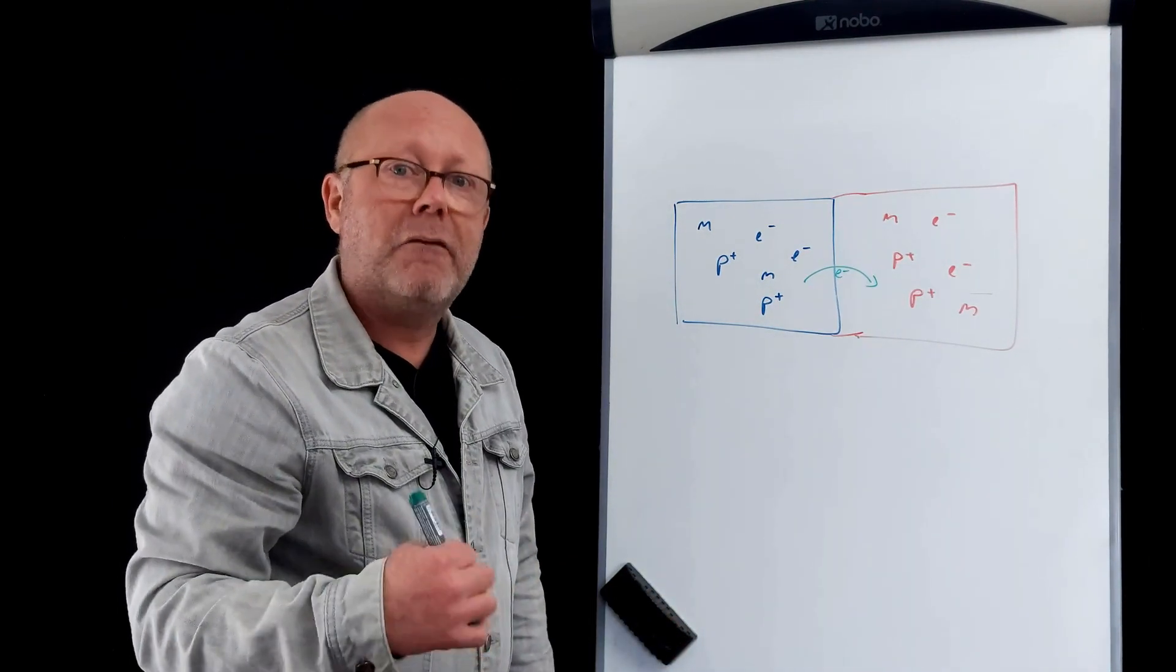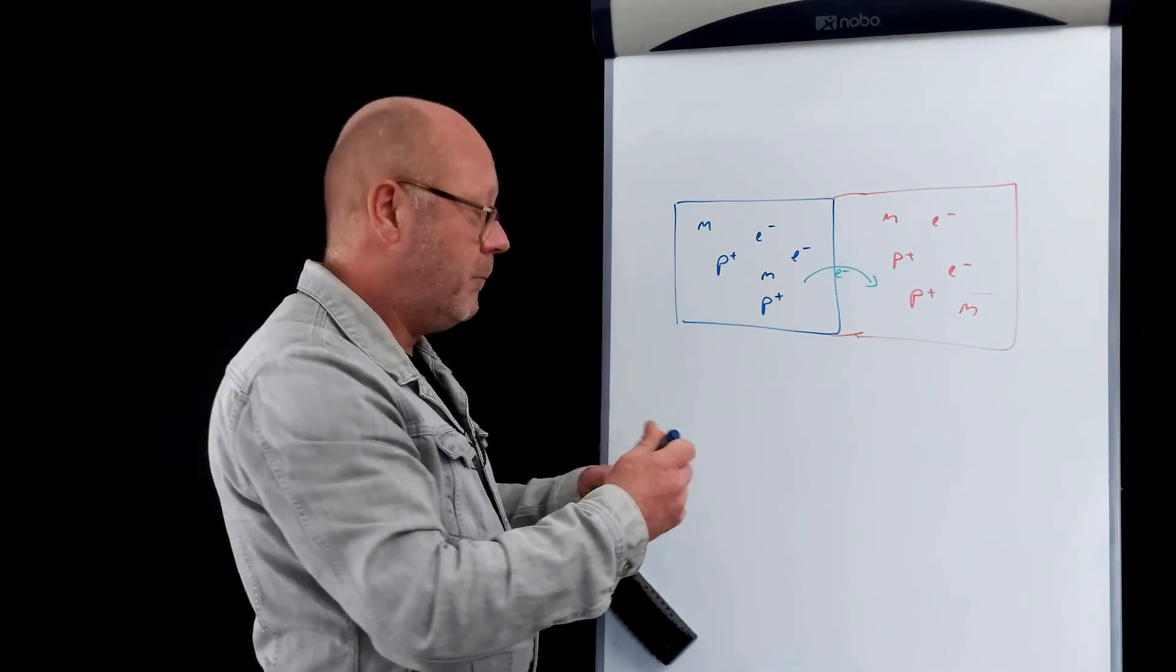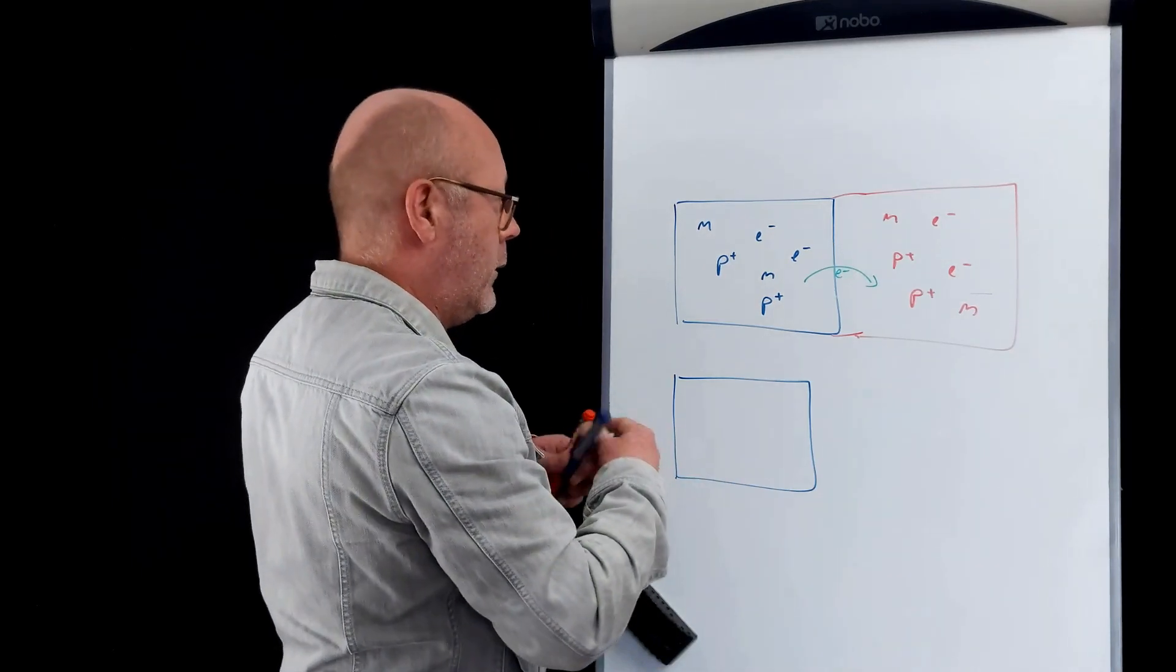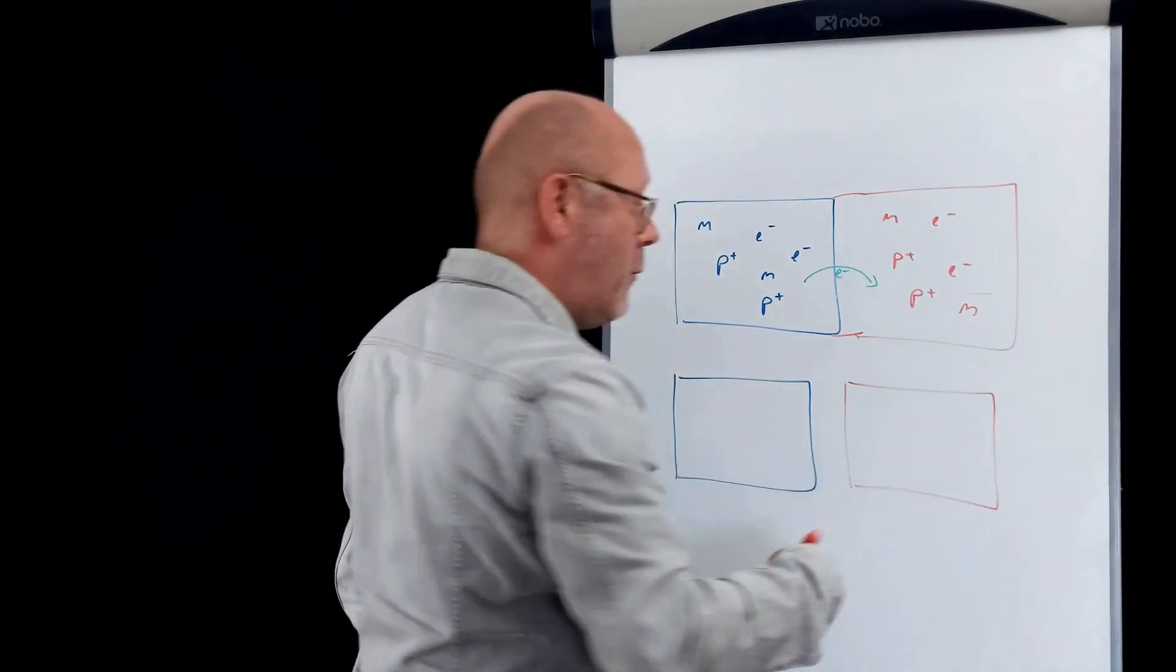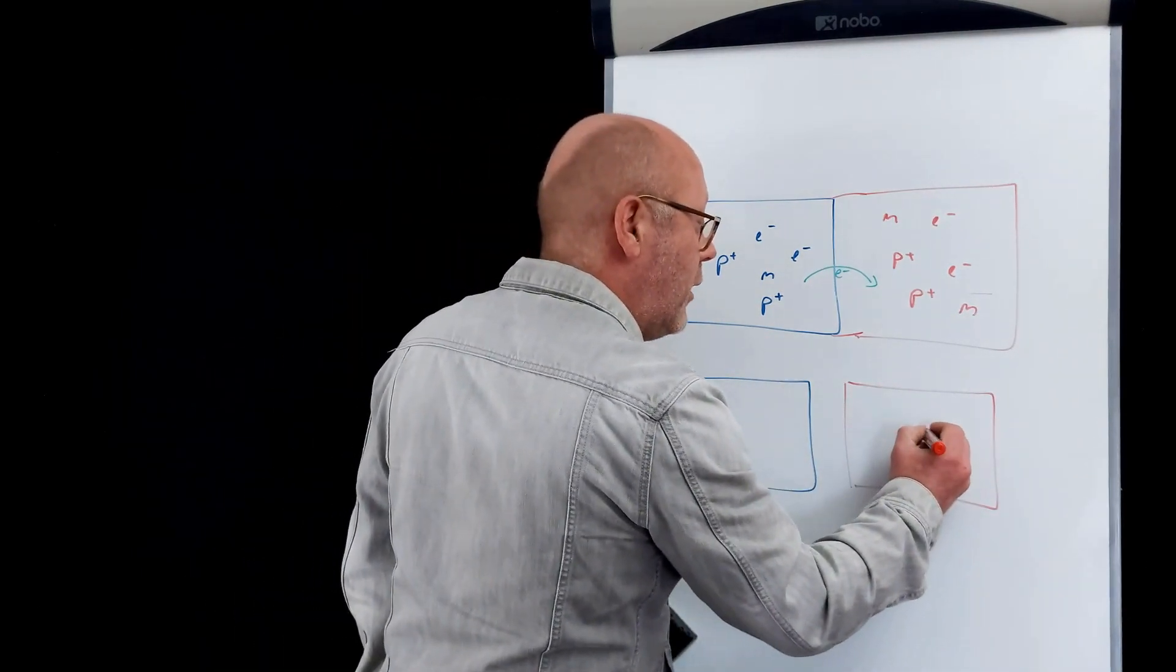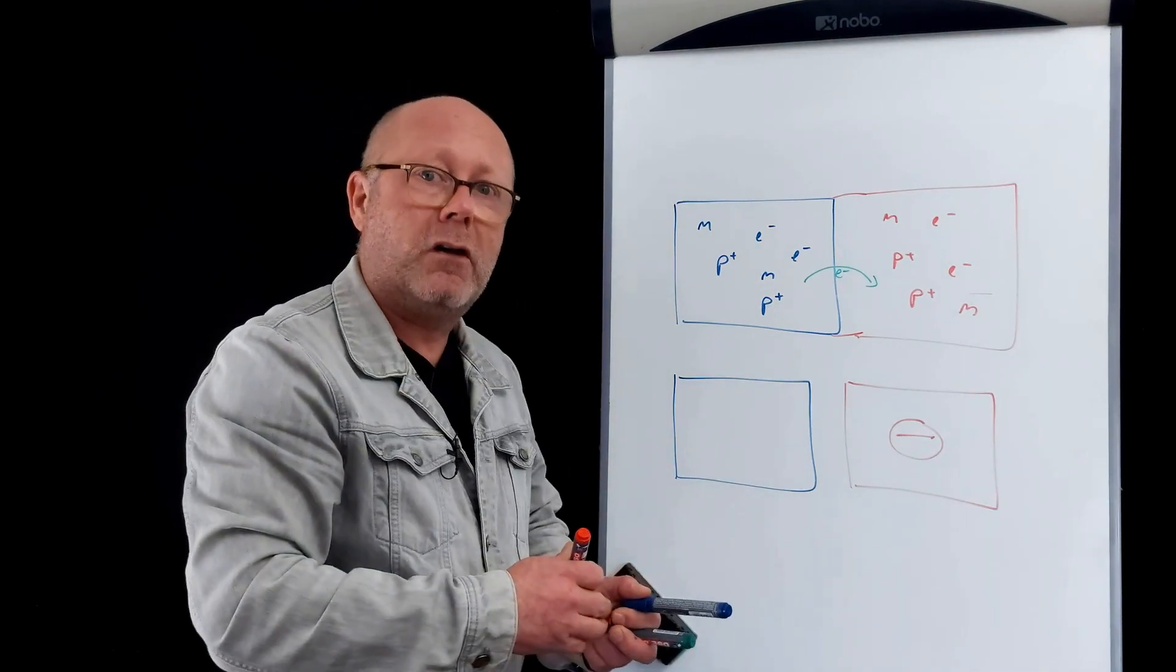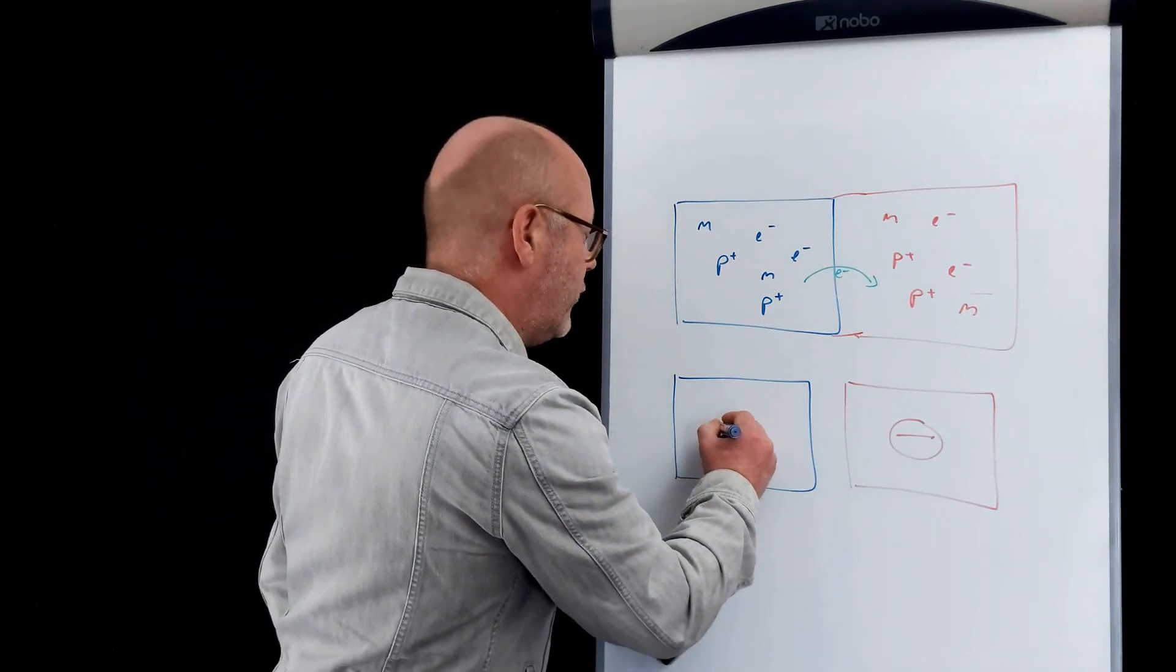However, this is called the triboelectric effect. And now, if you separate them, after having rubbed them together, the red material will have an extra amount of electrons. So it will be negatively charged. While this one will have a deficit of electrons, therefore there will be more protons than electrons, so it will be positively charged.